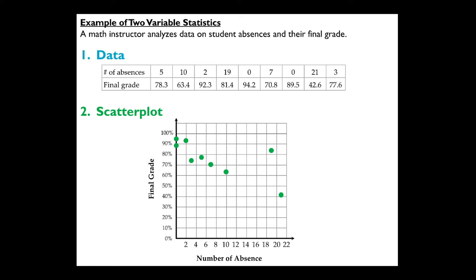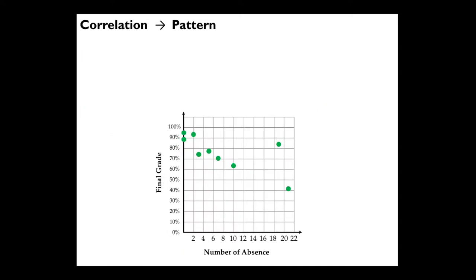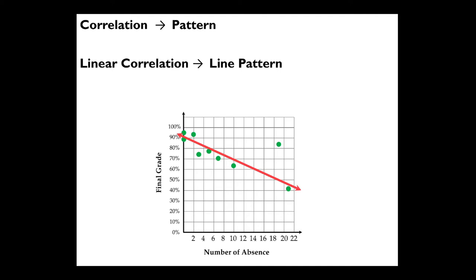The main point when we plot the data is to analyze whether there's a pattern. In this example of absences versus final grade, there seems to be a line pattern, except for one point out here that doesn't conform — we call that an outlier. When two variables exhibit a pattern on a scatter plot, we say there's a correlation. In this class we'll look at linear correlation — patterns that exhibit a line on a scatter plot.